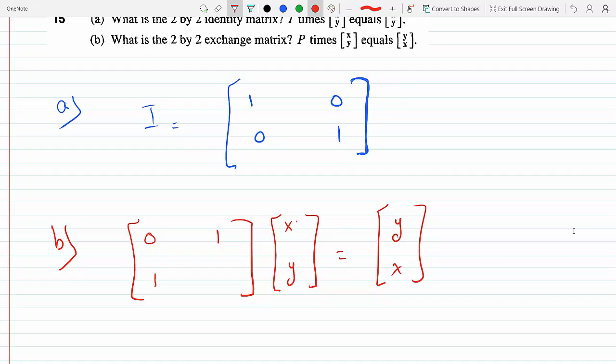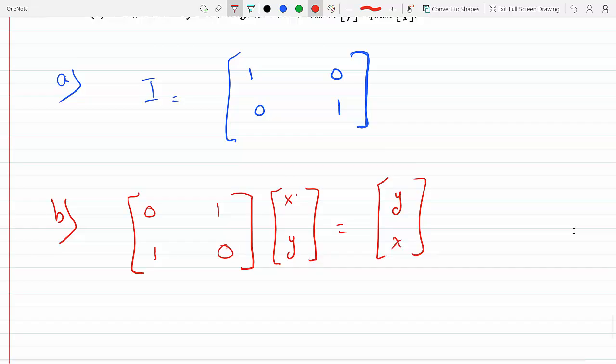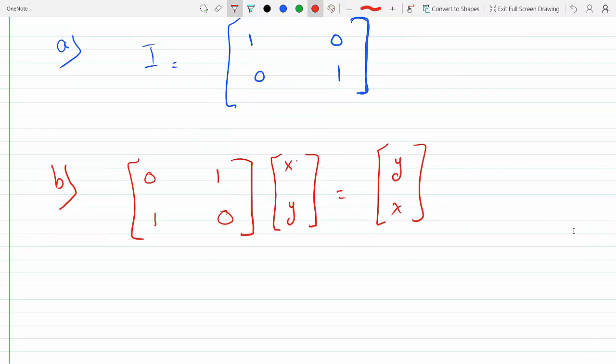...this needs to be a 1 so when it multiplies the X it gets me an X, and Y needs to go away so I would put a 0. So that means the exchange matrix would be 0, 1, 1, 0. That does it.